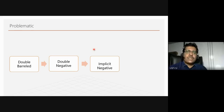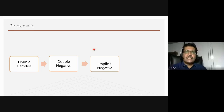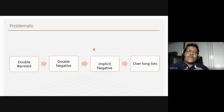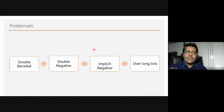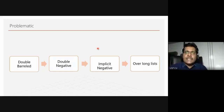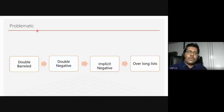Implicit negatives also need attention — words like 'forbidden,' 'barred,' or 'recalled' are implicitly negative, and respondents will take your question as negative. Also avoid providing overly long lists in a dropdown — if you provide a very long list, respondents might not have time to go through it and their answer may not be proper. You must make sure questions are not double-barreled, not double negatives, not implicitly negative, and that over-long lists are avoided.